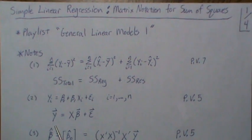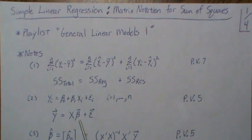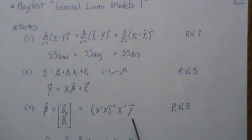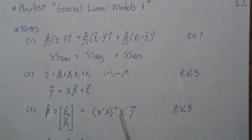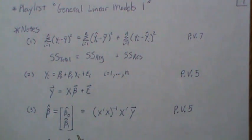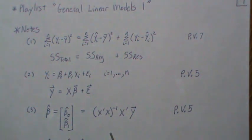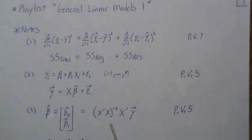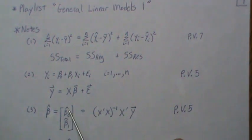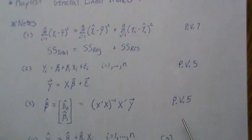This is a vector of our dependent variable, this is a matrix, this is a vector of the population parameters, and this is the error term. Also in previous video 5, we show that the least squares estimates can be written in matrix form like this. It's basically a vector where each component is the least squares estimate of the simple linear regression model.